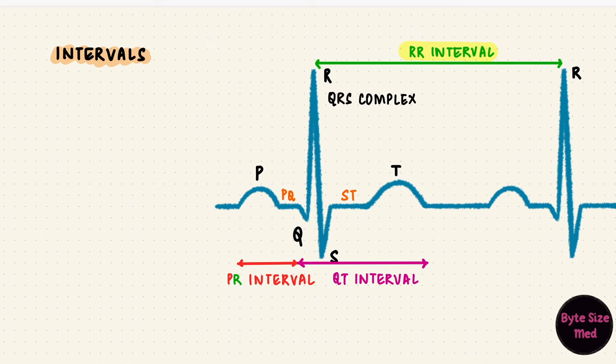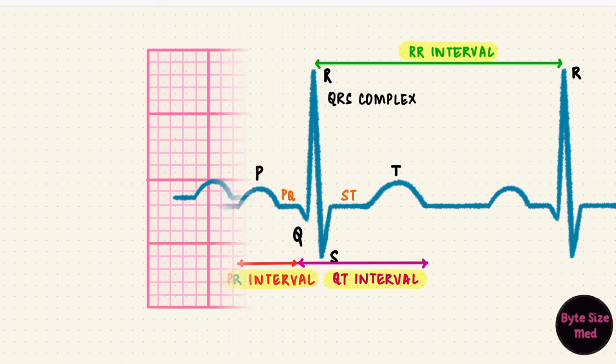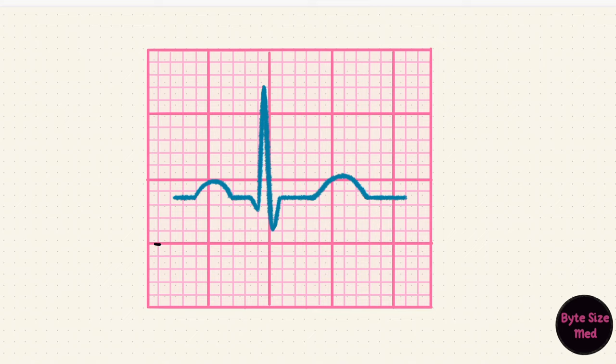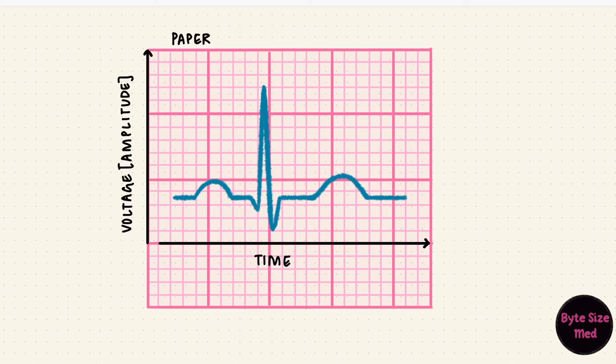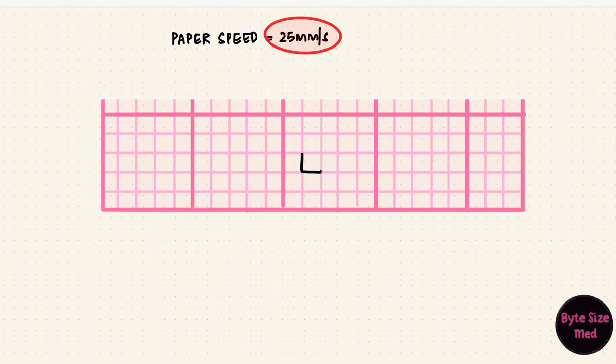But how are all these durations measured? The paper it's recorded on has a grid. Along the horizontal axis is the time. And along the vertical axis is the voltage. The speed of that paper is typically set to 25 mm per second. So if we assume that there are small and large squares. The large squares have a darker margin. Each small box corresponds to one millimeter. If 25 mm is a second, each small square would be 0.04 seconds. The large square with 5 boxes is 0.2 seconds.